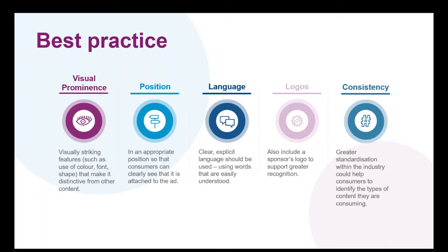The ASA's research found that advertising must almost invariably be visually different from the surrounding content in order to be obviously identifiable. Although the ASA maintains that using an ad label at the beginning is the absolute minimum expected, there is some best practice guidance worth bearing in mind. Disclosure should be visually striking, appropriately placed, use clear and explicit language that is easily understood, and perhaps include a logo to support greater recognition. Greater standardization within the industry can ultimately help consumers to better recognize when they're seeing advertising content.